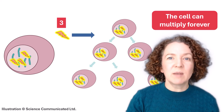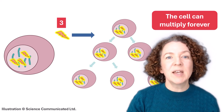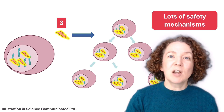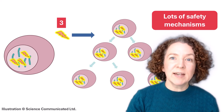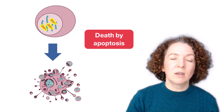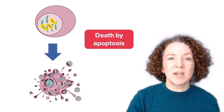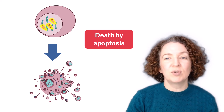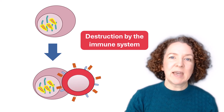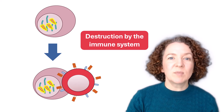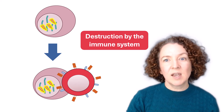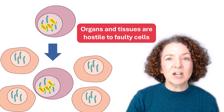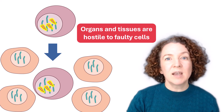But even when cells accumulate multiple mutations over time, that still doesn't necessarily mean you're going to develop cancer. That's because there are lots of safety mechanisms to prevent us from developing cancer. One safety mechanism is that many mutations immediately trigger the faulty cell to die by a process called apoptosis. A second safety mechanism is that our immune system is on the lookout for cancer cells and destroys any that emerge. Our organs and tissues are also naturally hostile to cancer cells and keep them in check.